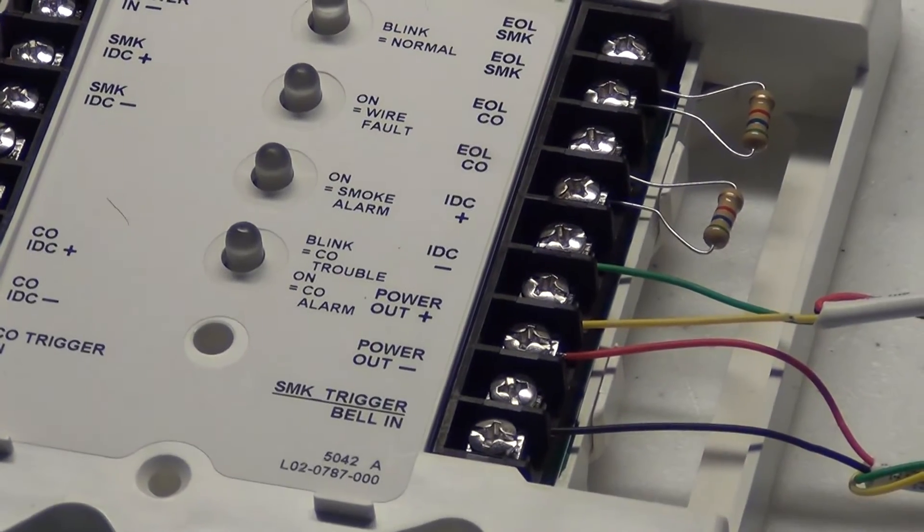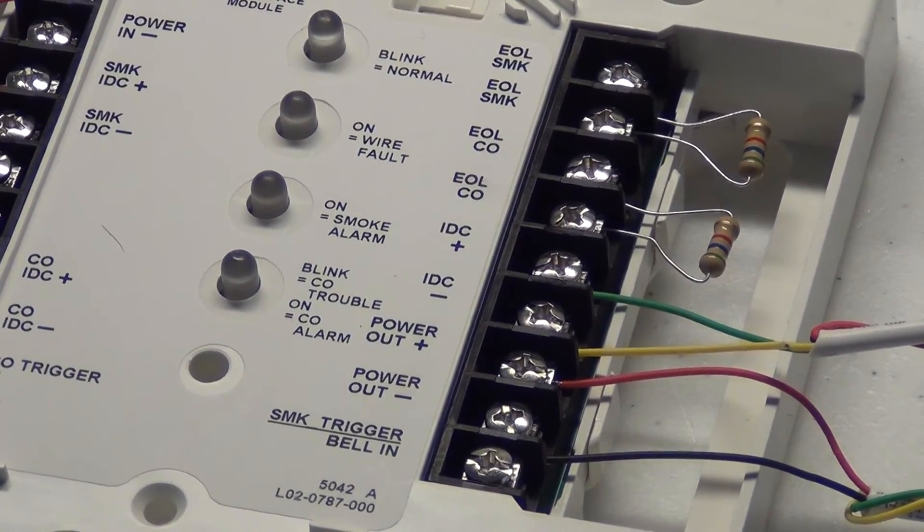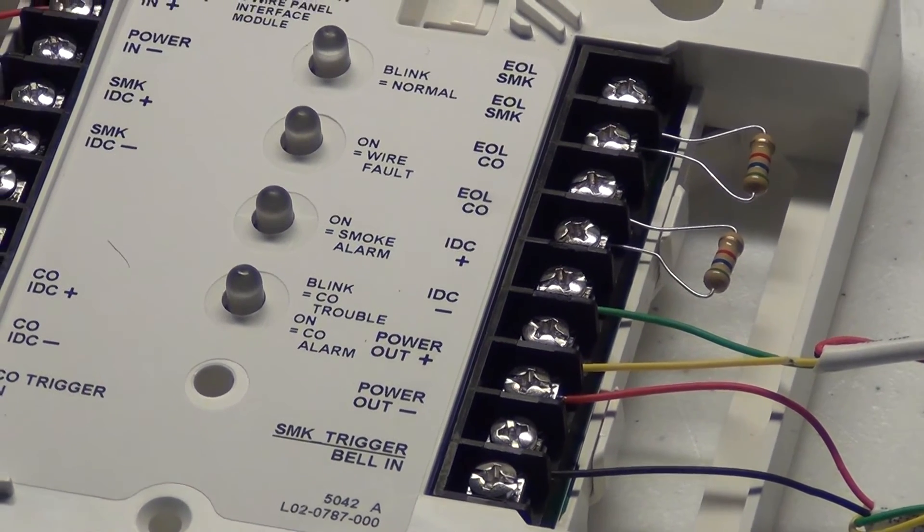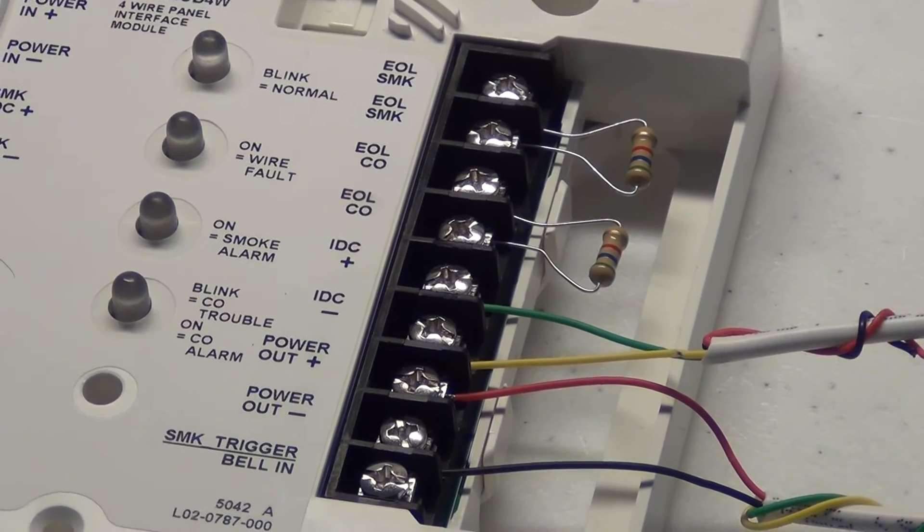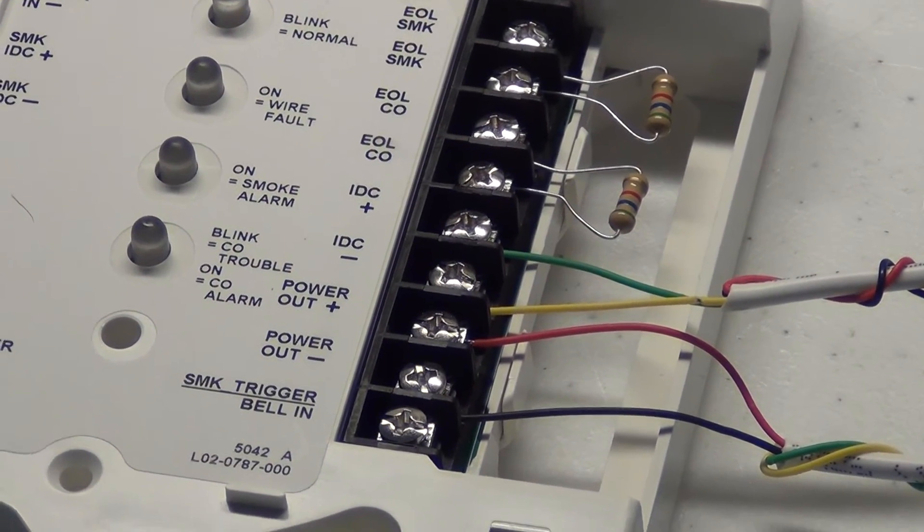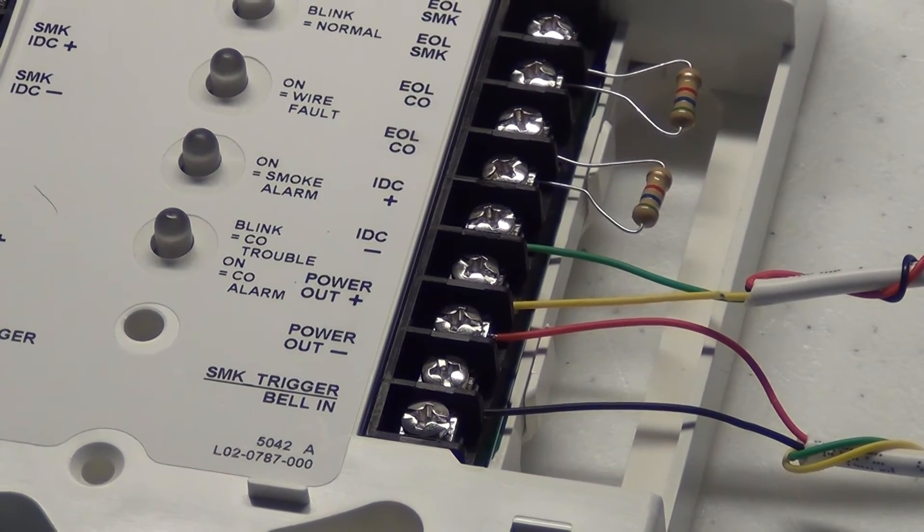Over here on the right hand side you will see we have wiring terminals to connect over to your smoke CO combo units. These two spots up here are for your end of line resistors. I've just got some in here for example but you will use whatever value of resistor your alarm panel calls for.